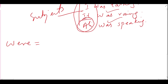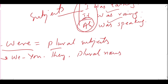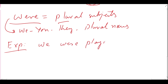Next is the use of were, also used for the past. Were is used with plural subjects — like we, you, they — and also with plural nouns. For example, 'We were playing.' We cannot say 'we was' — that is wrong. According to the subject we, for the past tense, we have to use were.